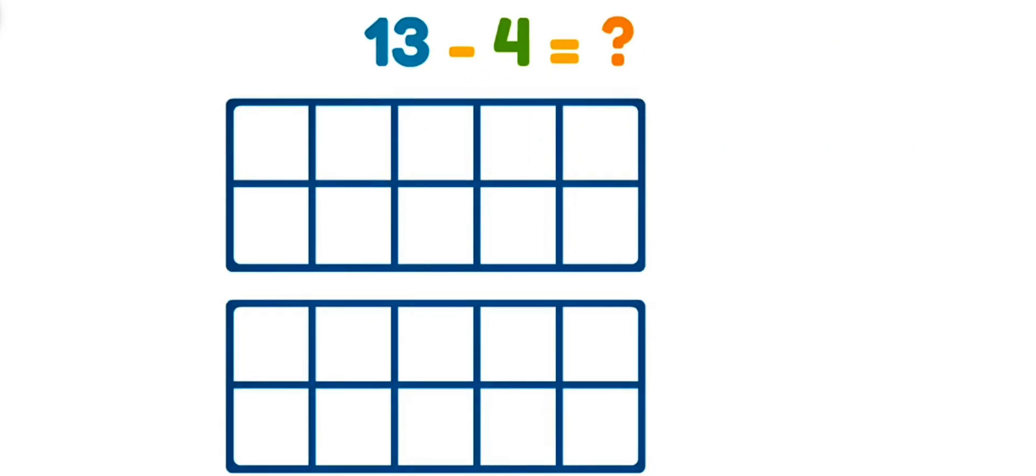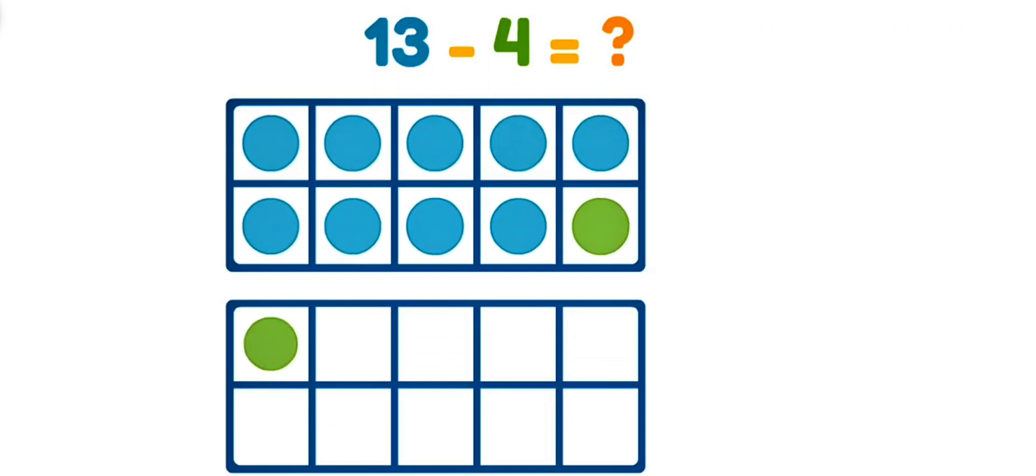Let's use a ten-frame to figure it out! This is a ten-frame because ten dots fit inside! Let's move the dots from the equation into the ten-frame! Now we have to take away four! Let's start with the ones that don't fit! One! Two! Three! And this one in the frame makes four! Which means we can do ten minus one! We took away one from the ten-frame! So the difference is nine!